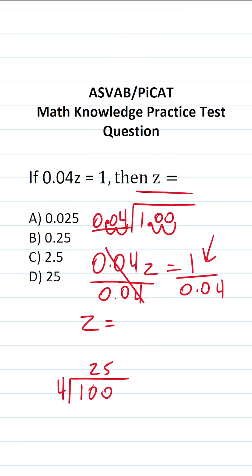4 times 25 is exactly 100 with no remainder. So z in this case is D, 25.